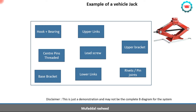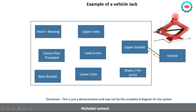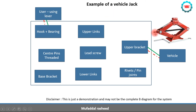The external elements which come in contact with the jack are: first, the vehicle — it will be in contact with the upper bracket. We insert the jack below the vehicle so that the upper bracket touches the vehicle body, so there is physical contact as well as load transfer between the upper bracket and the vehicle. Then we have the user, who operates the hook and rotates the lead screw using the handle. The handle and user are external elements outside the product boundary.